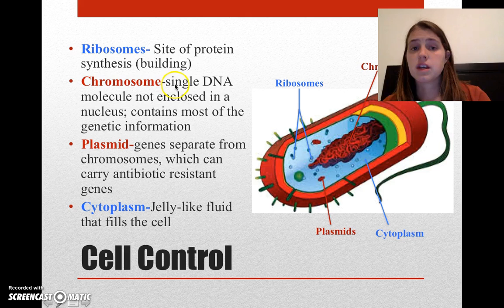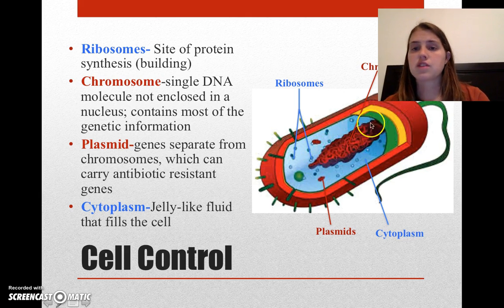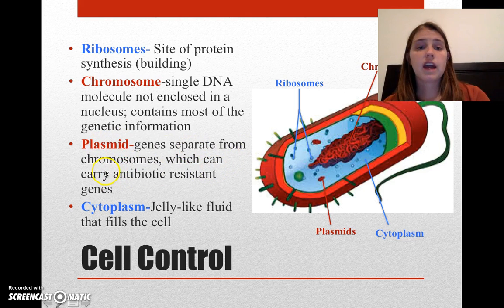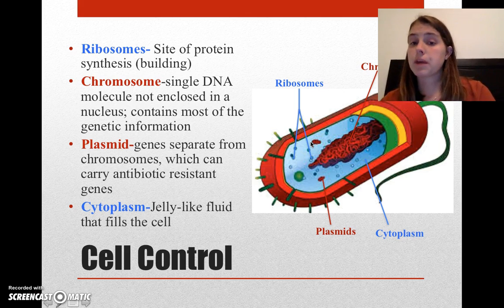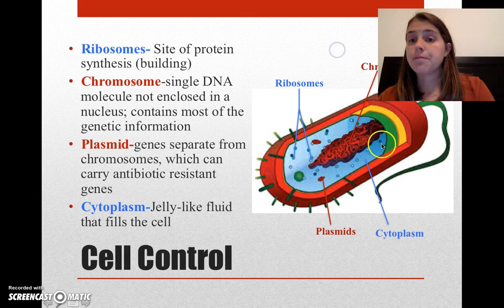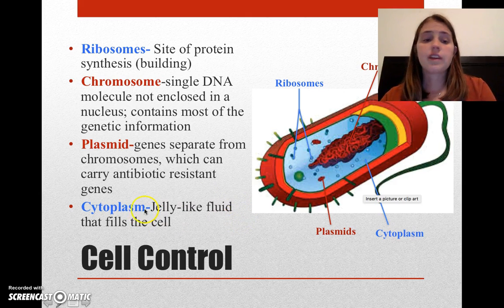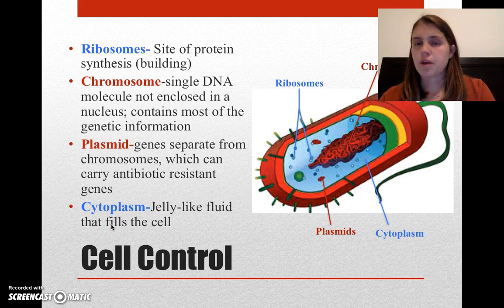Next, we have chromosomes — a single DNA molecule. In prokaryotes, it's not enclosed in a nucleus because there is no nucleus, and it contains most of the cell's genetic information. We also have plasmids, which are genes separate from chromosomes that can carry antibiotic-resistant genes. These are small additions of genetic information that sometimes make the bacteria unable to be killed by antibiotics. Finally, we have our cytoplasm, which serves the same purpose as in eukaryotic cells — it's a jelly-like fluid that fills the cell, cushions everything, and keeps everything in place.